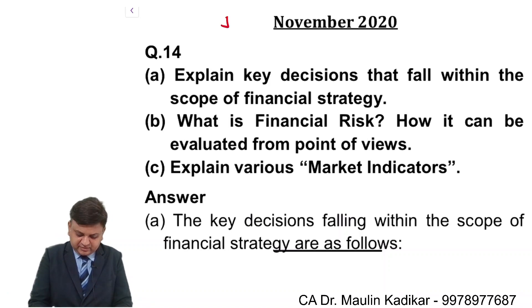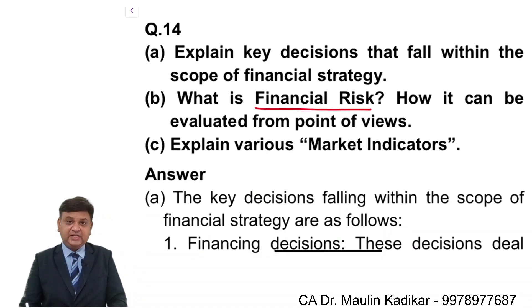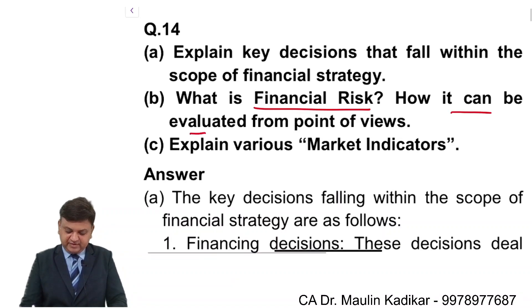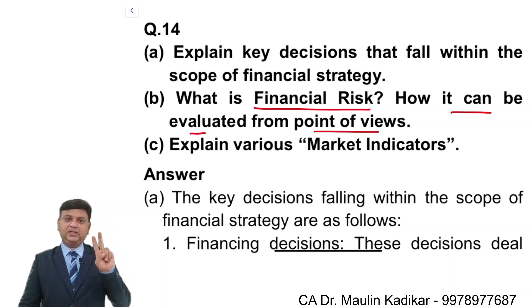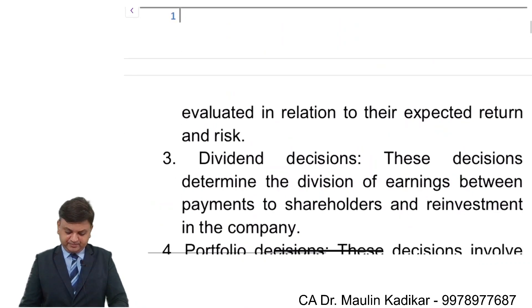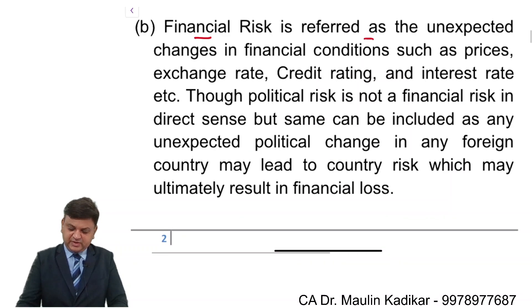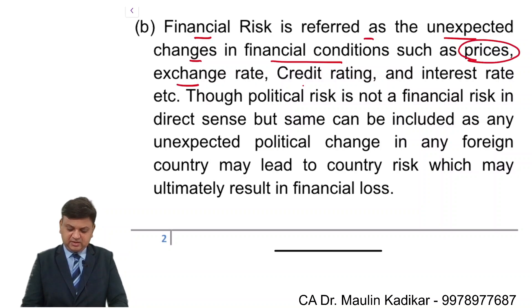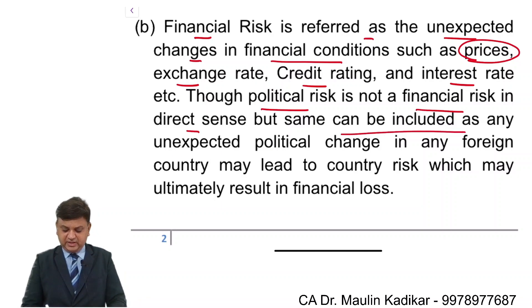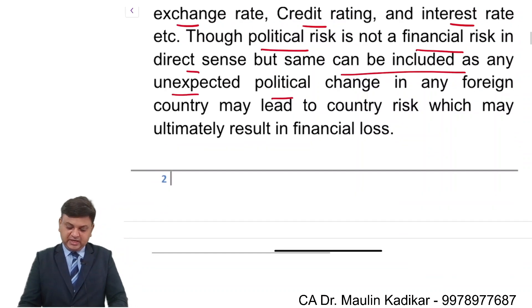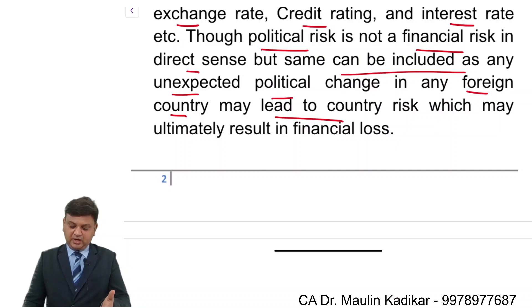From the Revisionary Test Paper, November 2020, question 14b: what is financial risk and how can it be evaluated from different points of view? There are three points of view: investor, company, and government. Financial risk refers to unexpected changes in financial conditions such as prices, exchange rate, credit rating, and interest rate. Though political risk is not a financial risk in a direct sense, it can be included since unexpected political change in a foreign country may lead to country risk, which may ultimately result in financial loss.